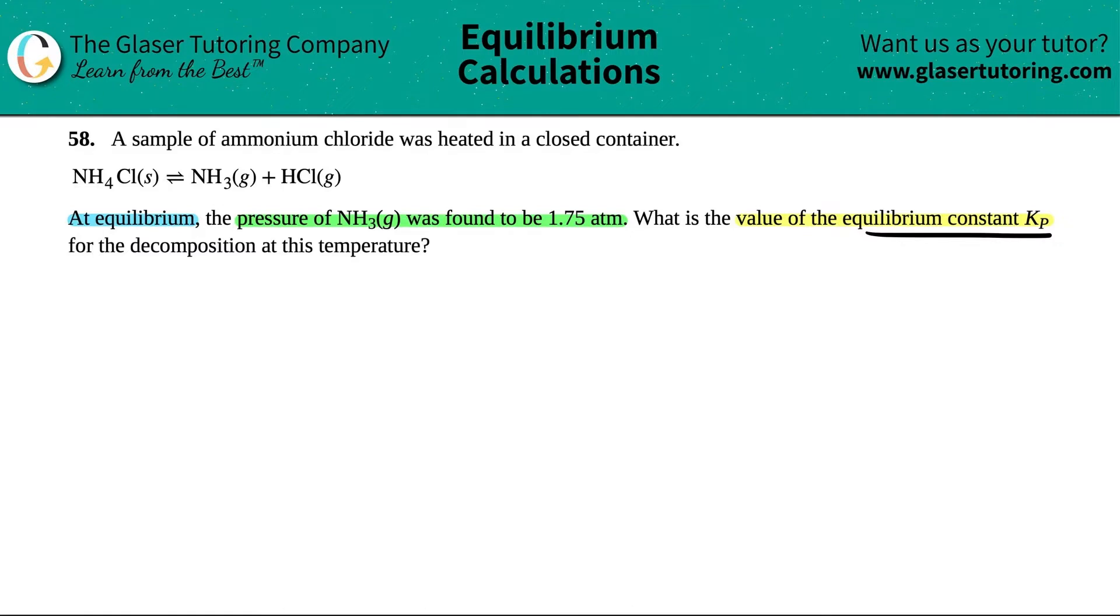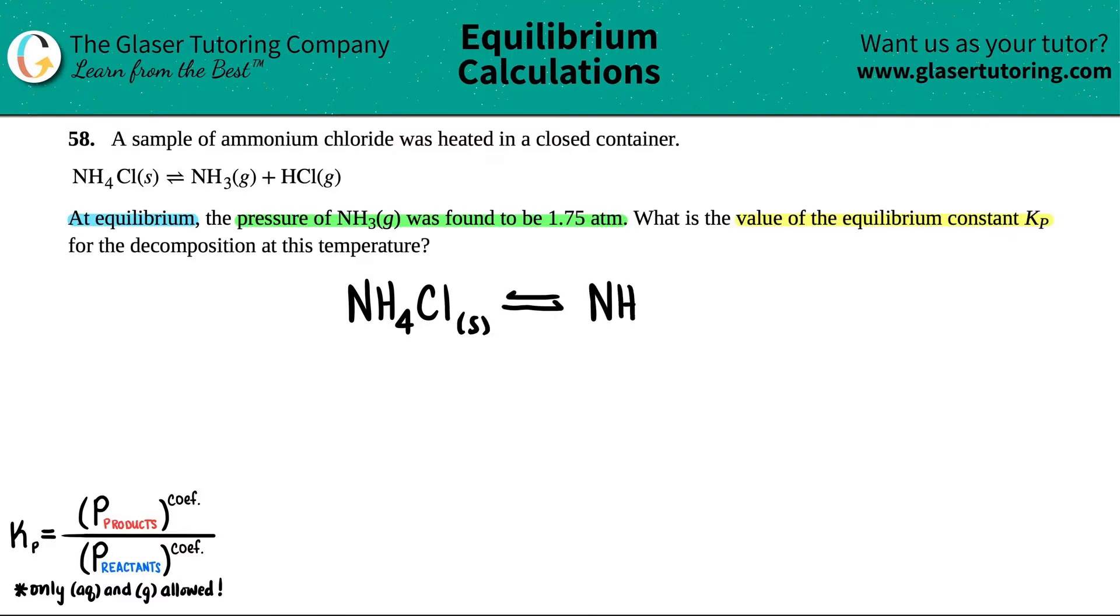Kp is a generalized formula: the pressures of the products divided by the pressures of the reactants, both raised to their coefficients. The coefficients are the big numbers in front. Let's rewrite this formula and the equilibrium equation: NH4Cl solid comes to equilibrium with NH3 gas plus HCl gas.